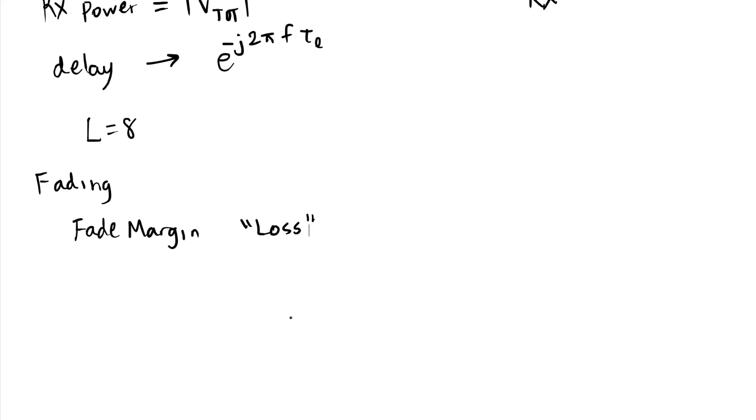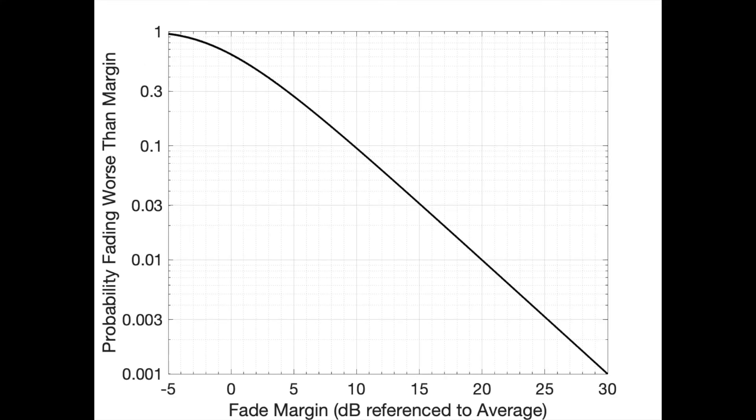What might happen is if we have lots of multi-path, those multi-path can add together in kind of a central limit theorem and give us a complex circular Gaussian for our value of v total. In that case you would see this plot. It's called a Rayleigh channel, and the fade margin that you need for the Rayleigh channel is given here. For example, if you set a fade margin of 10 dB, there's about a 9.5 percent chance that the signal experiences a fade worse than 10 dB.